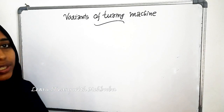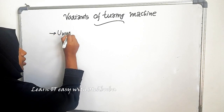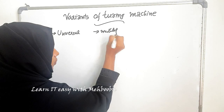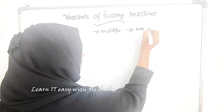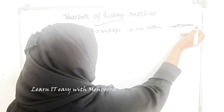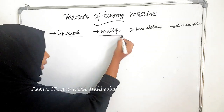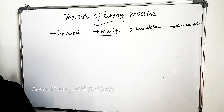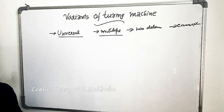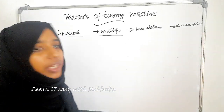In this video we will see different variants of Turing machines. The main variants are universal Turing machines, multi-tape Turing machines, non-deterministic Turing machines, and enumerator Turing machines. We have already discussed universal Turing machine and multi-tape Turing machine in our previous videos. In this video we will be discussing non-deterministic Turing machine and enumerator Turing machine.